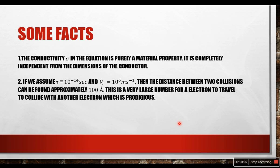We have talked about Ohm's law, its expression in terms of conductivity and derived it. Before finishing our discussion, I would like to introduce you with some facts. The conductivity sigma in the equation is purely a material property. It is completely independent from the dimension of the conductor. If we assume tau equals 10 to the power minus 14 seconds and Vr equals 10 to the power 6 meter per second, then the distance between two collisions can be found approximately 100 angstrom. This is a very large number for an electron to travel to collide with another electron which is prodigious.